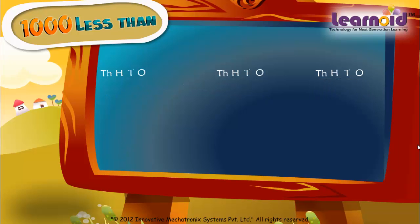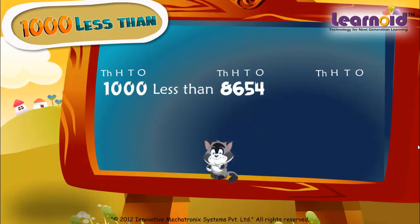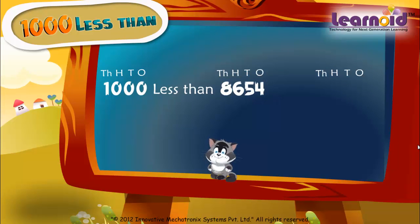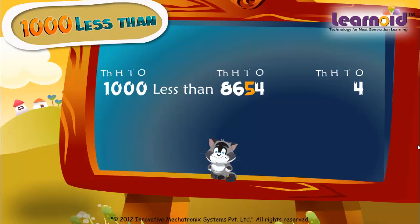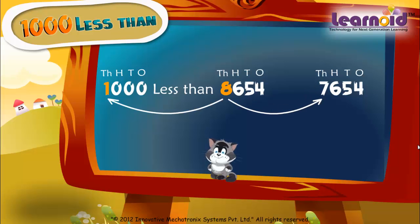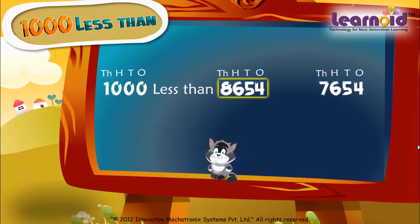One more example. Find one thousand less than eight thousand six hundred fifty-four. Write four in the one's place. One thousand less than eight thousand six hundred fifty-four is seven thousand six hundred fifty-four.